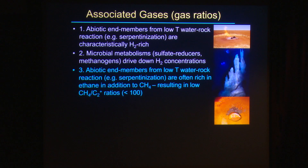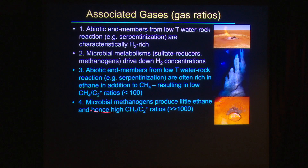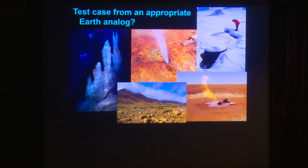Moving to methane-to-ethane ratios: abiotic end members associated with water-rock reaction are often rich in ethane in addition to methane, resulting in relatively low methane-to-C2 ratios, usually less than 100, sometimes as low as 10. In contrast, microbial methanogens produce methane but typically very little higher hydrocarbons, so microbial methane tends to have very high methane-to-C2 ratios, on the order of several thousands. These ratios alone provide a parsimonious approach to test hypotheses using an appropriate Earth analogue.